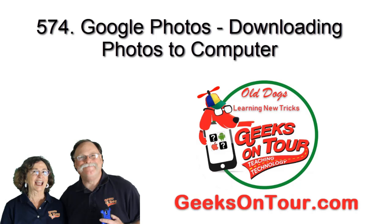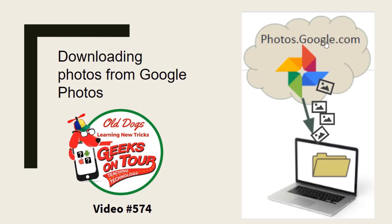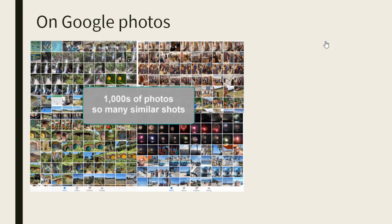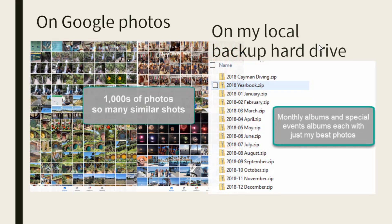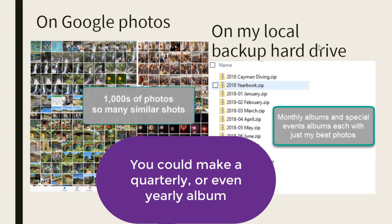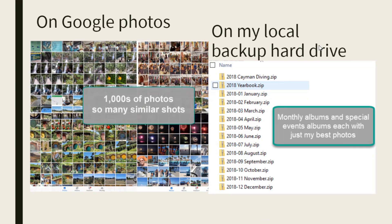This quick tutorial video is about downloading photos from Google Photos. Google Photos stores your entire library of photos in the cloud so you can see them with any connected device. But most people also want a copy on their local computer or backup hard drive. On Google Photos it stores all of my photos — I have thousands and thousands and so many similar shots. I don't need all of those on my hard drive. I have a plan of making a monthly album of just my best shots, and those albums I do download from the cloud to a backup hard drive.